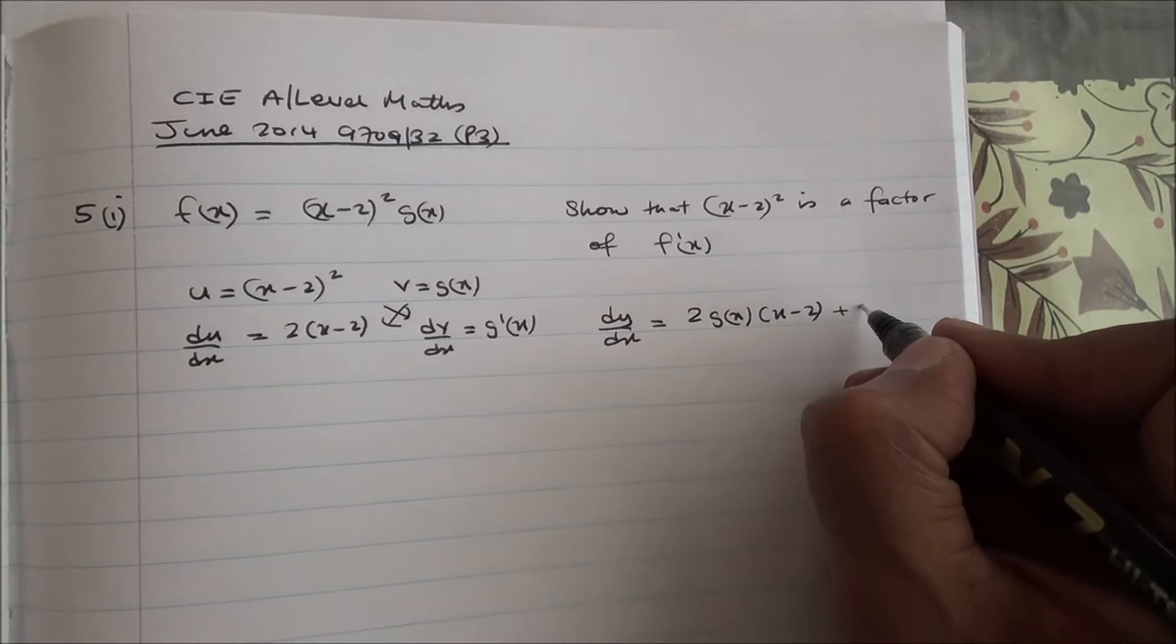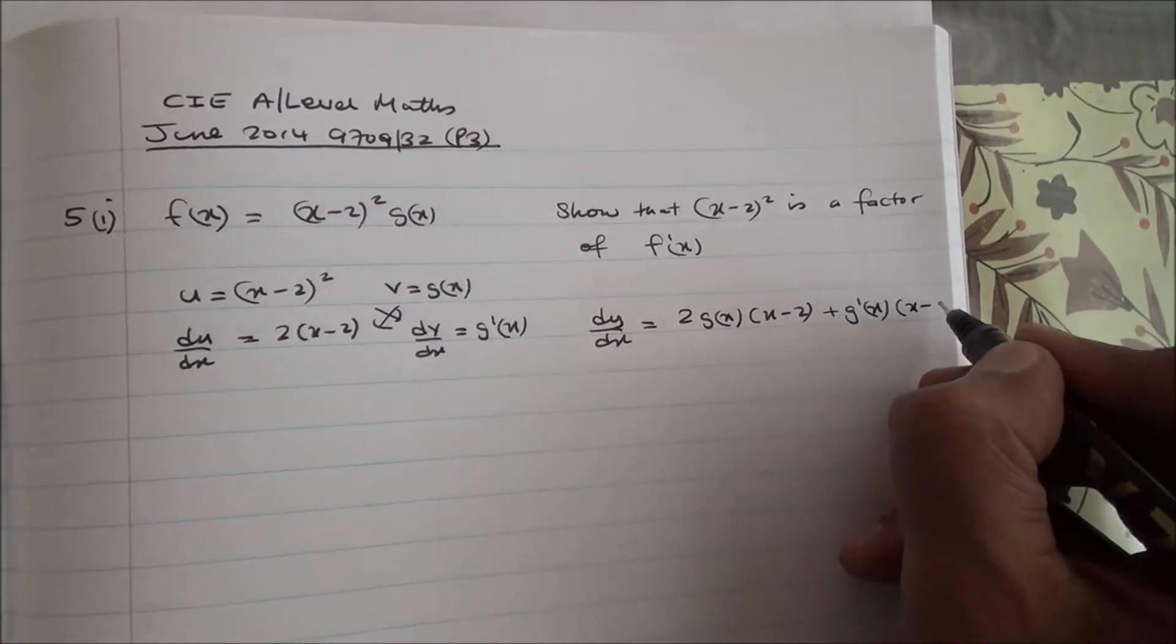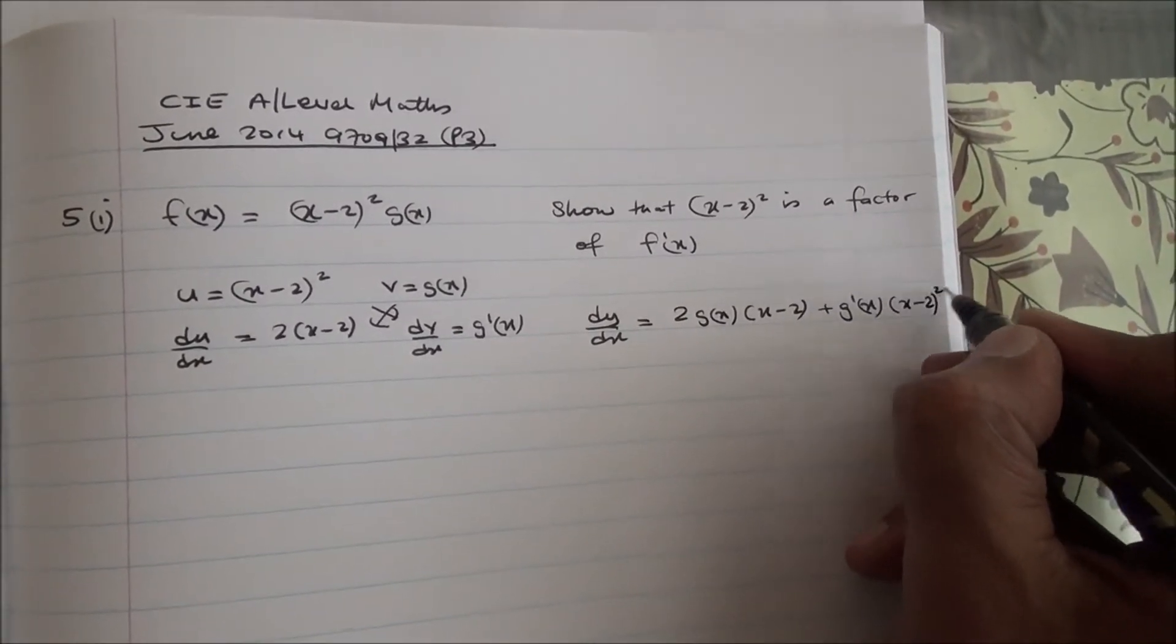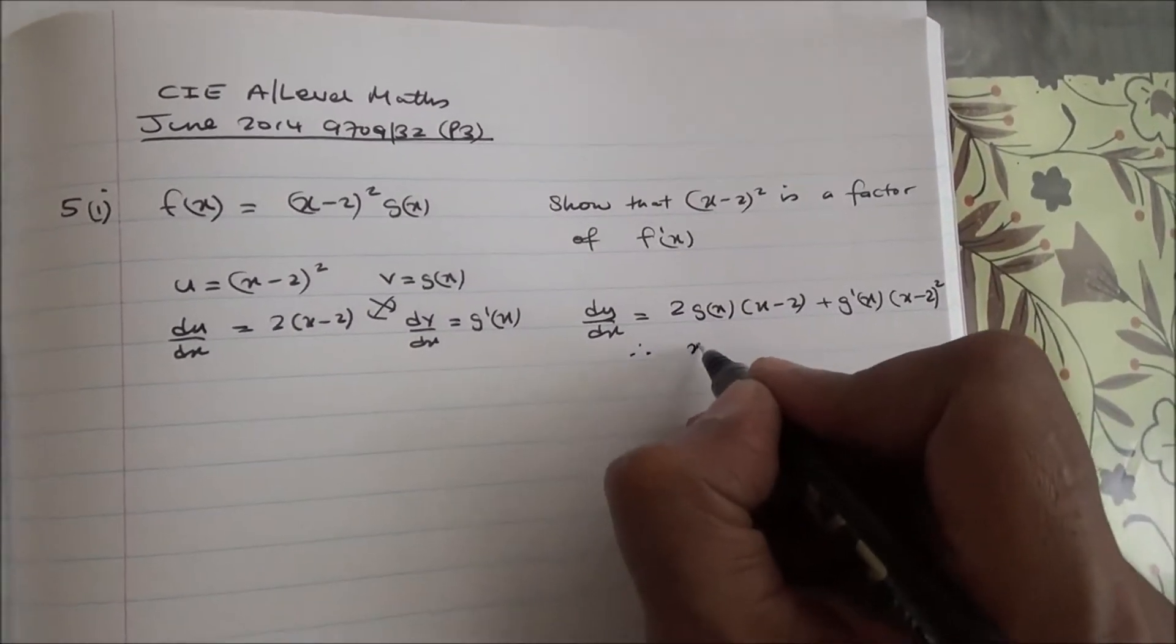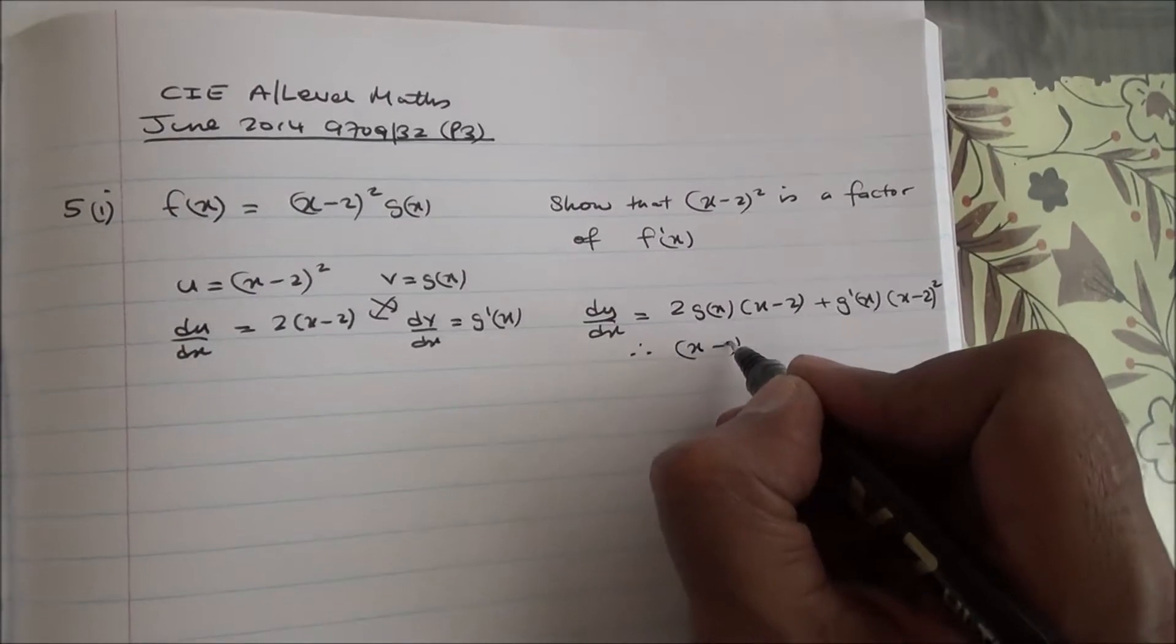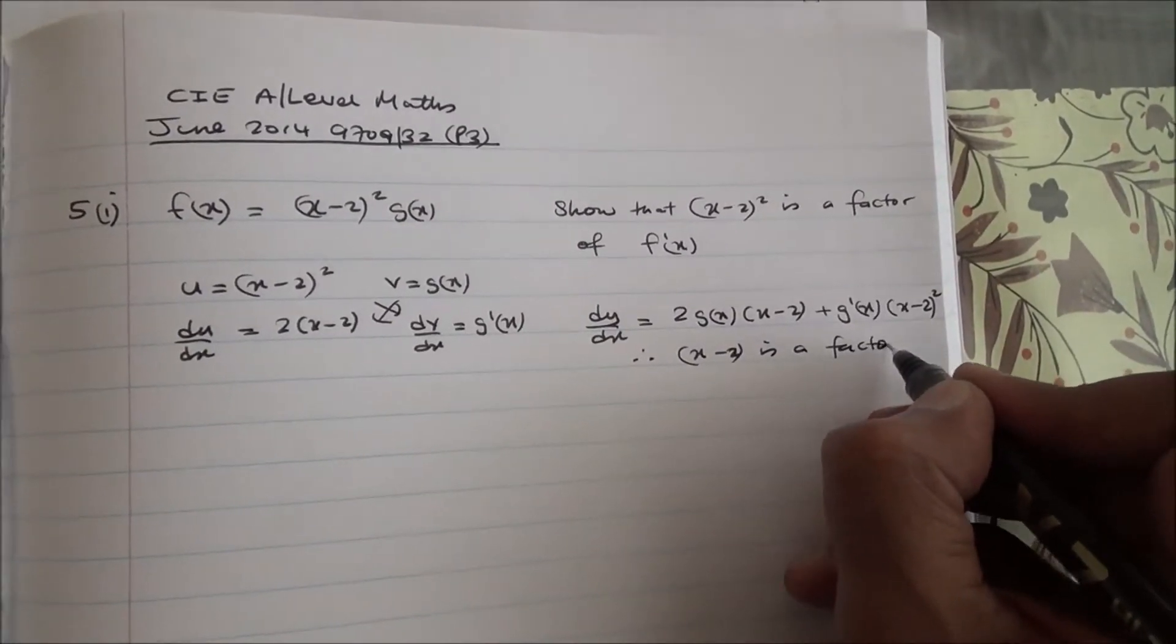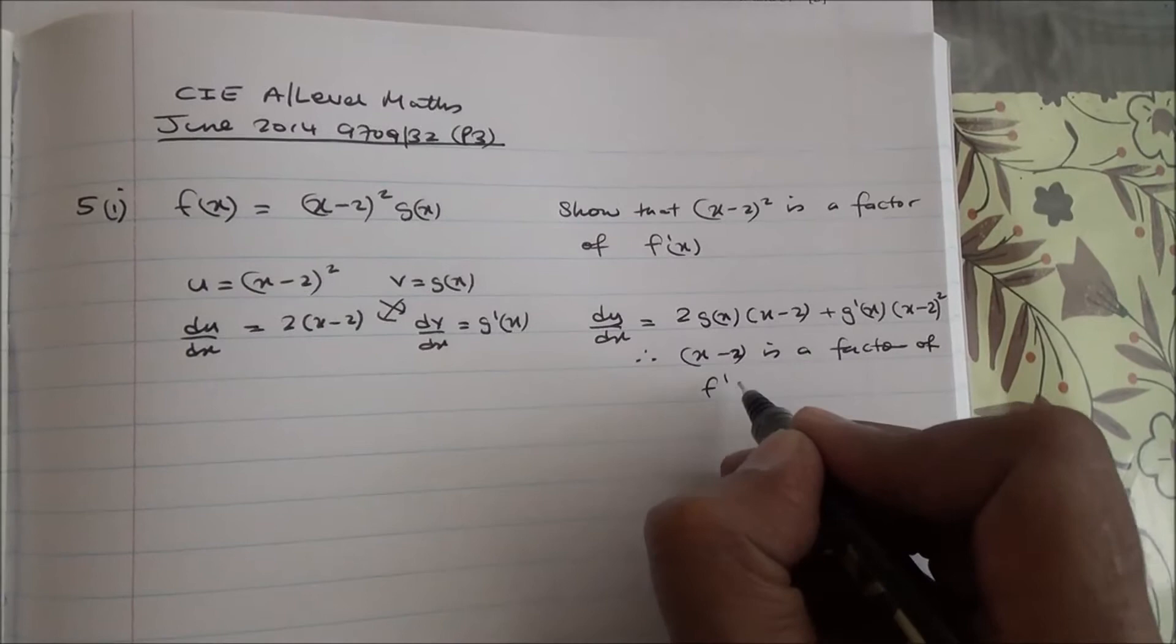and also (x-2)²g'(x). So plus g'(x)(x-2)². Clearly, (x-2) is a factor. Therefore, (x-2) is a factor of f'(x).